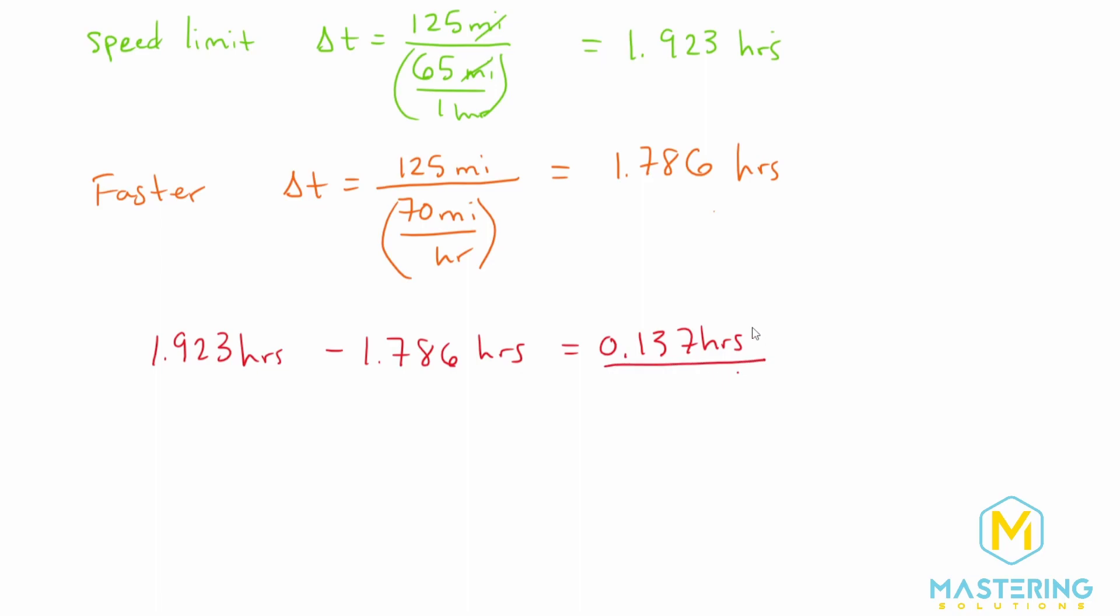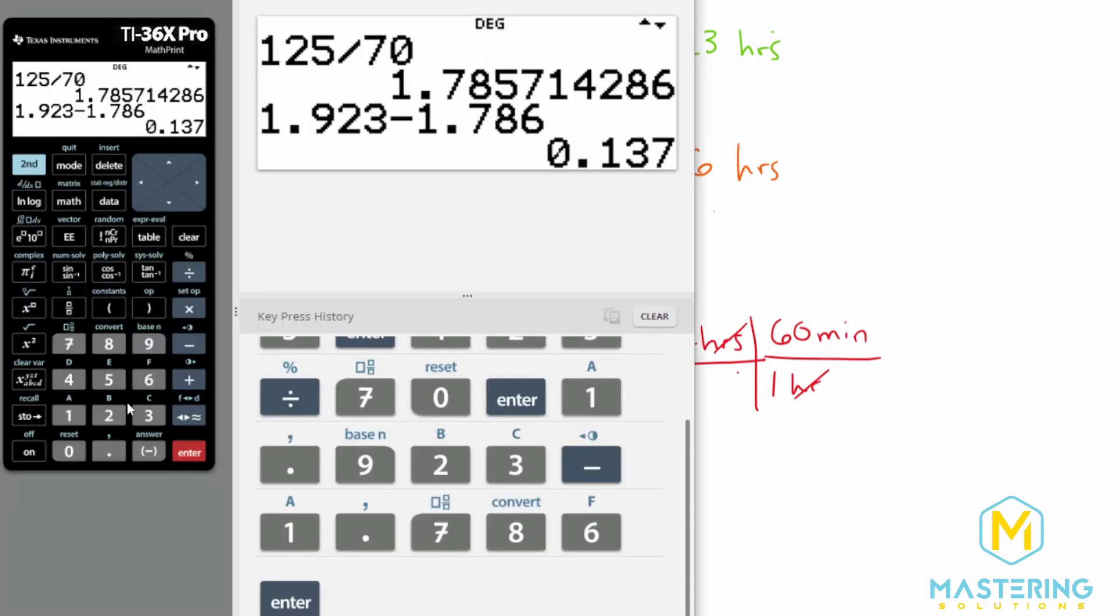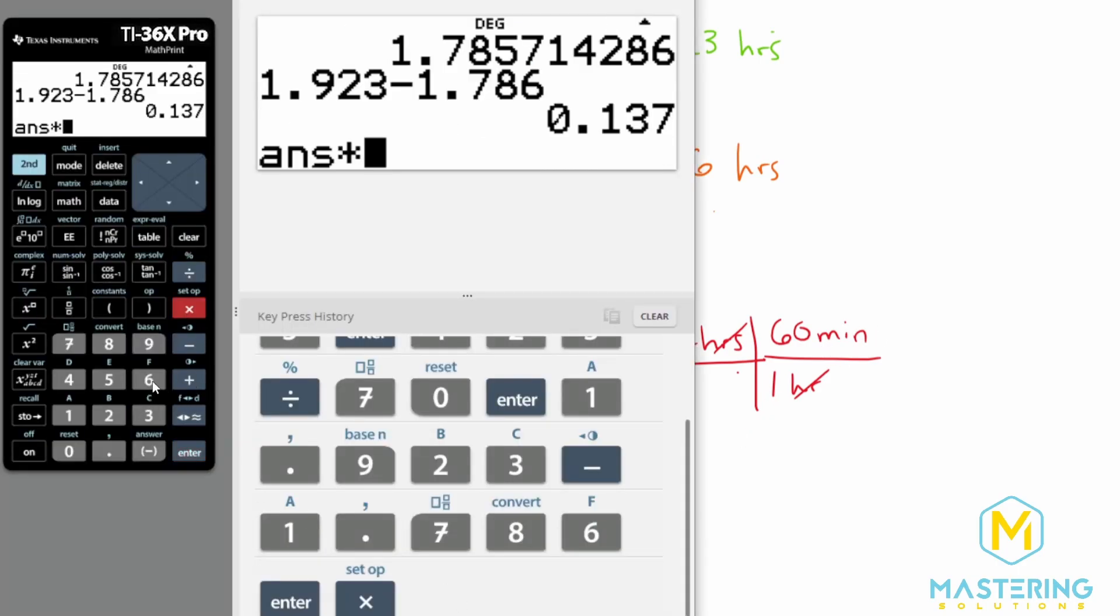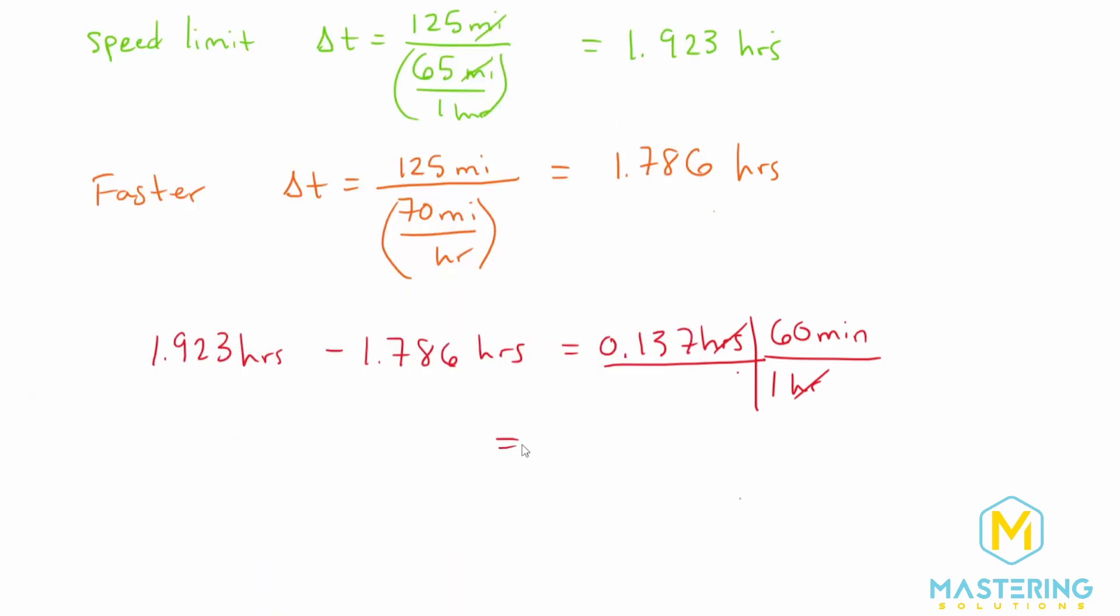And now we need to convert this over into minutes for the question. So we know in one hour there is 60 minutes, and now the hours will cancel and we're left in minutes. So we have 0.137 times 60 gives us 8.22 or rounded. The book rounds up in this, so I think they probably rounded these numbers maybe a little bit differently. But in either case, he saves 8.3 minutes by going 5 miles per hour faster for 125 miles.